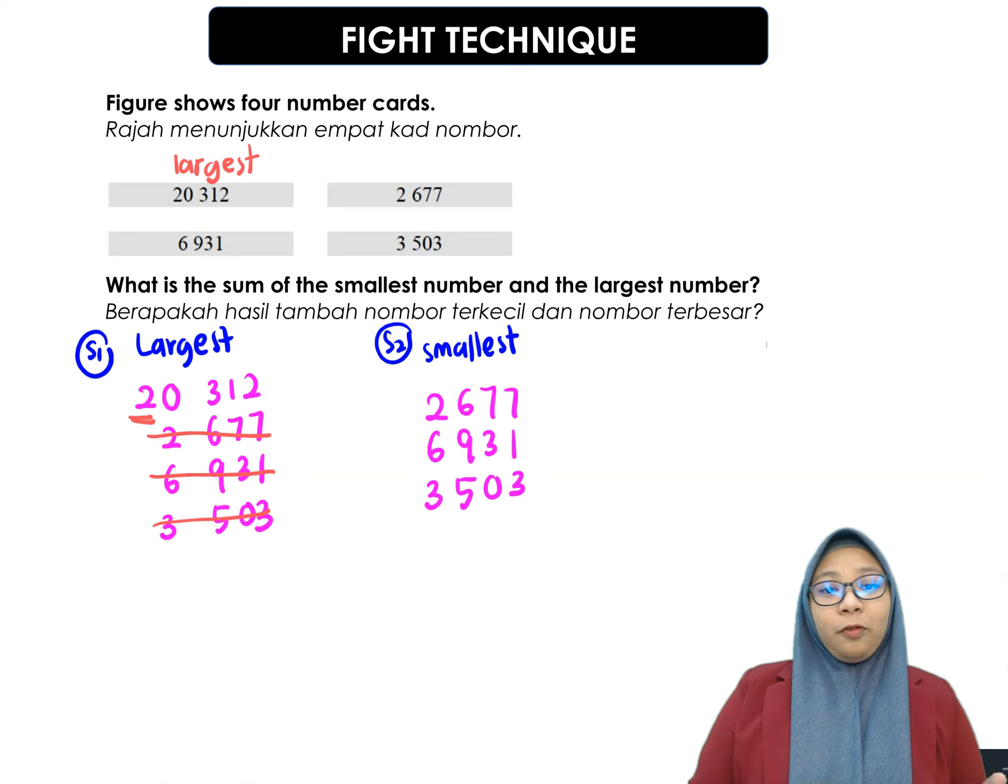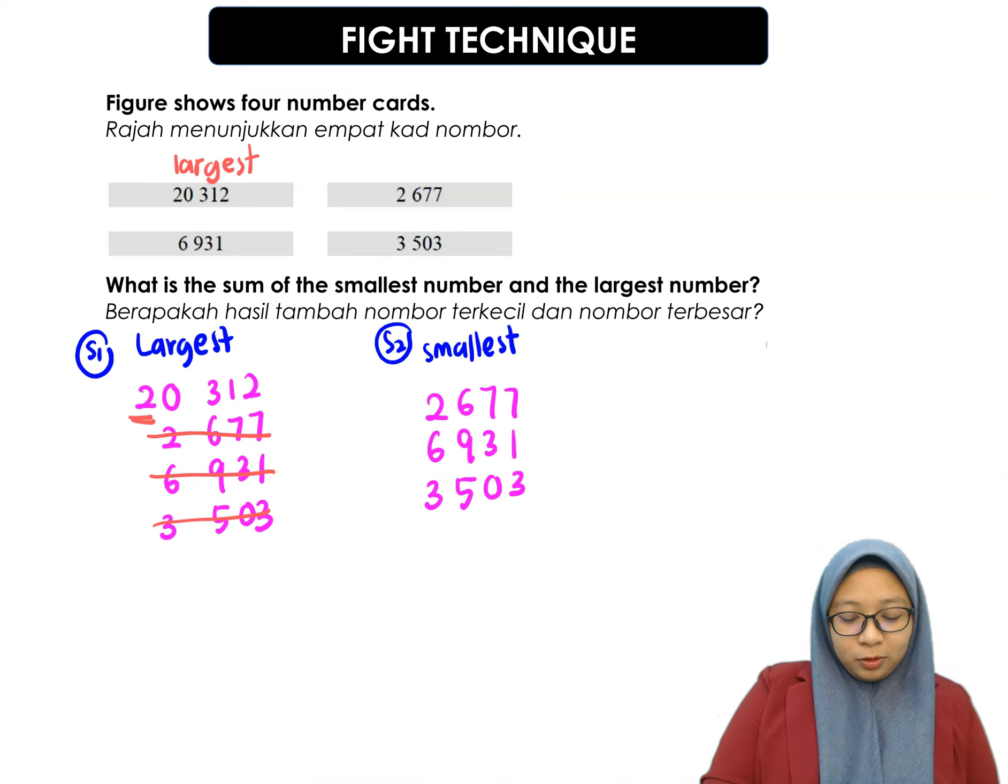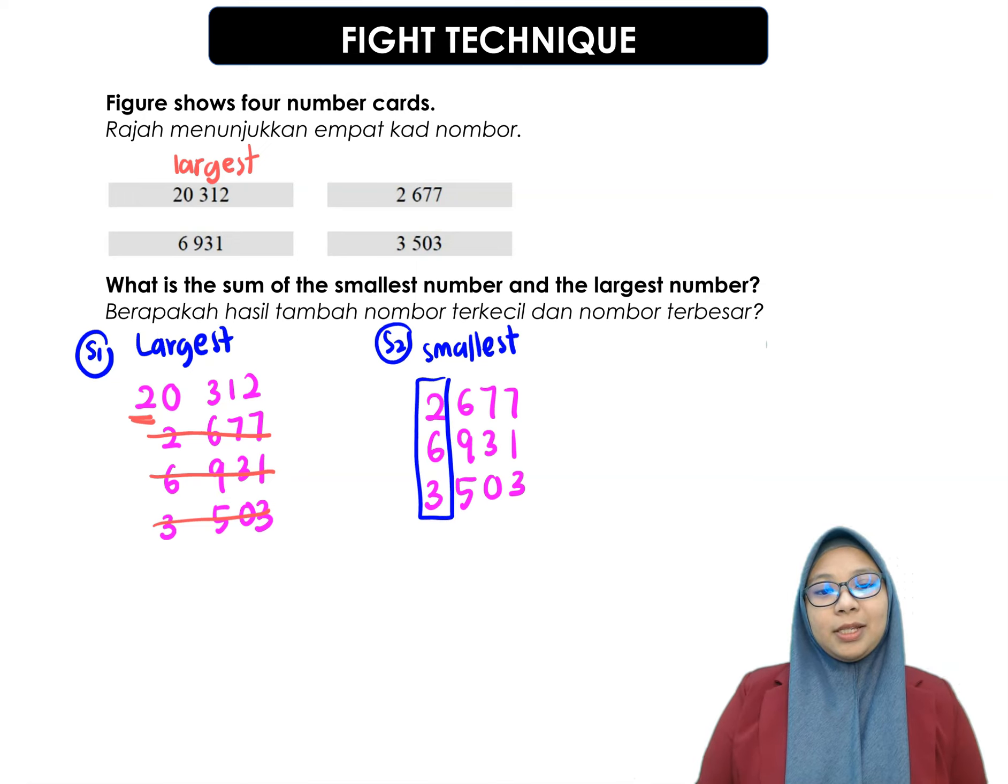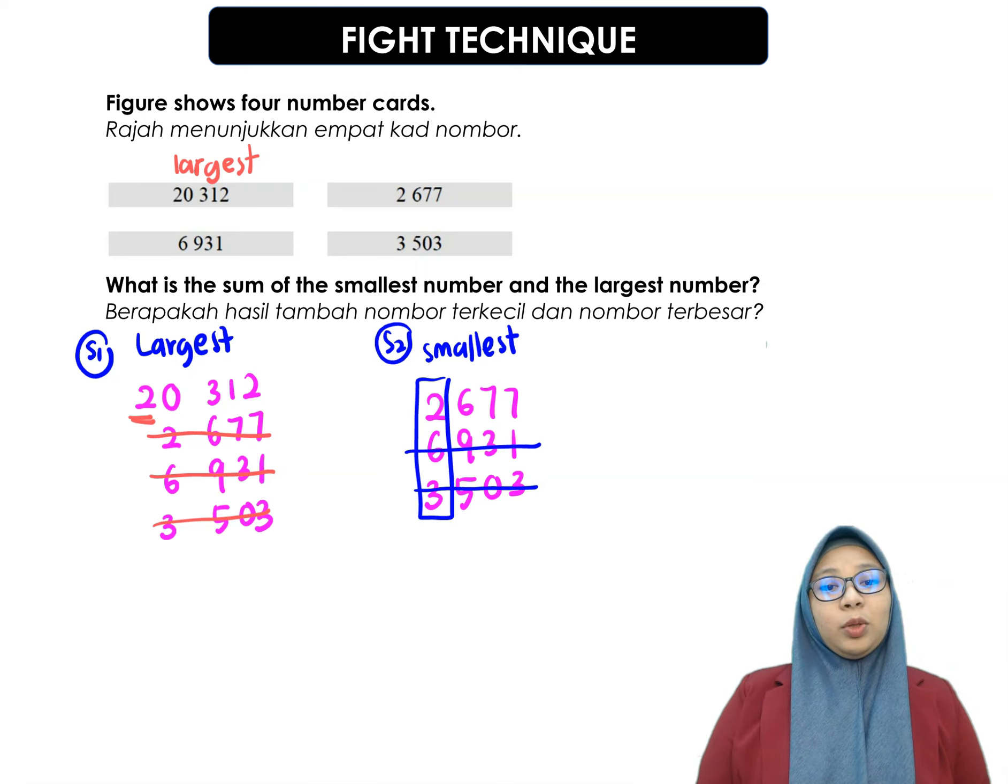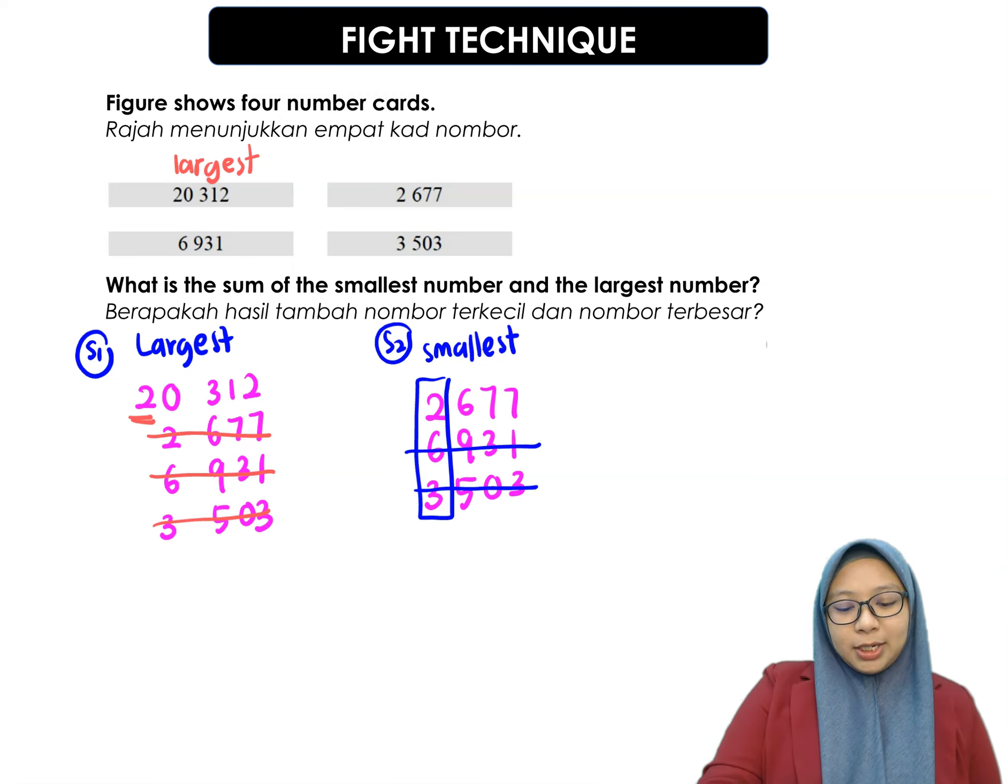So, fight with each other using place value. So, the first one is 1,000 place value. For 1,000 place value, we have number 2, number 6, and number 3. So, you have to find out which one has the smallest value. So, between 2, 6, and 3, 2 is the smallest number. So, the others you can cancel out. So, we have here 2,677 is the smallest number.